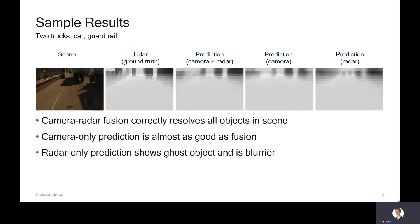Let me present a few sample results. Here we have a scene with two trucks, a car, and a guardrail. I'm showing the same thing in the next few slides: the scene with the camera image for illustration, then the LiDAR ground truth where the darkness of the pixels indicates how close the object is, the depth map. Then I have the output of our camera radar fusion network, the solution we propose in this paper. For comparison, we also trained two networks that use only the camera and only the radar. The output of these two can be compared to the proposed camera radar fusion output to assess the usefulness of each sensor and how much fusion buys you.